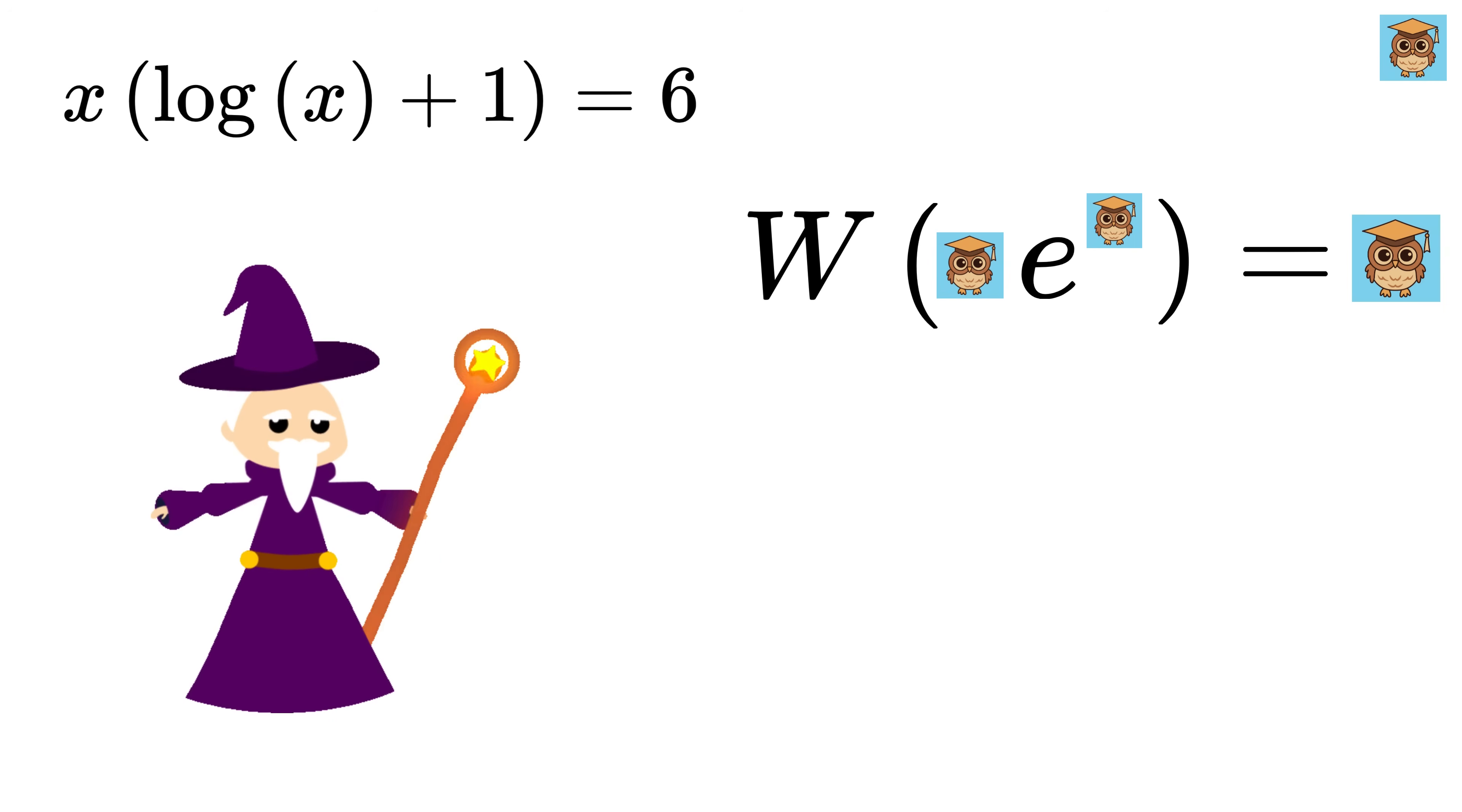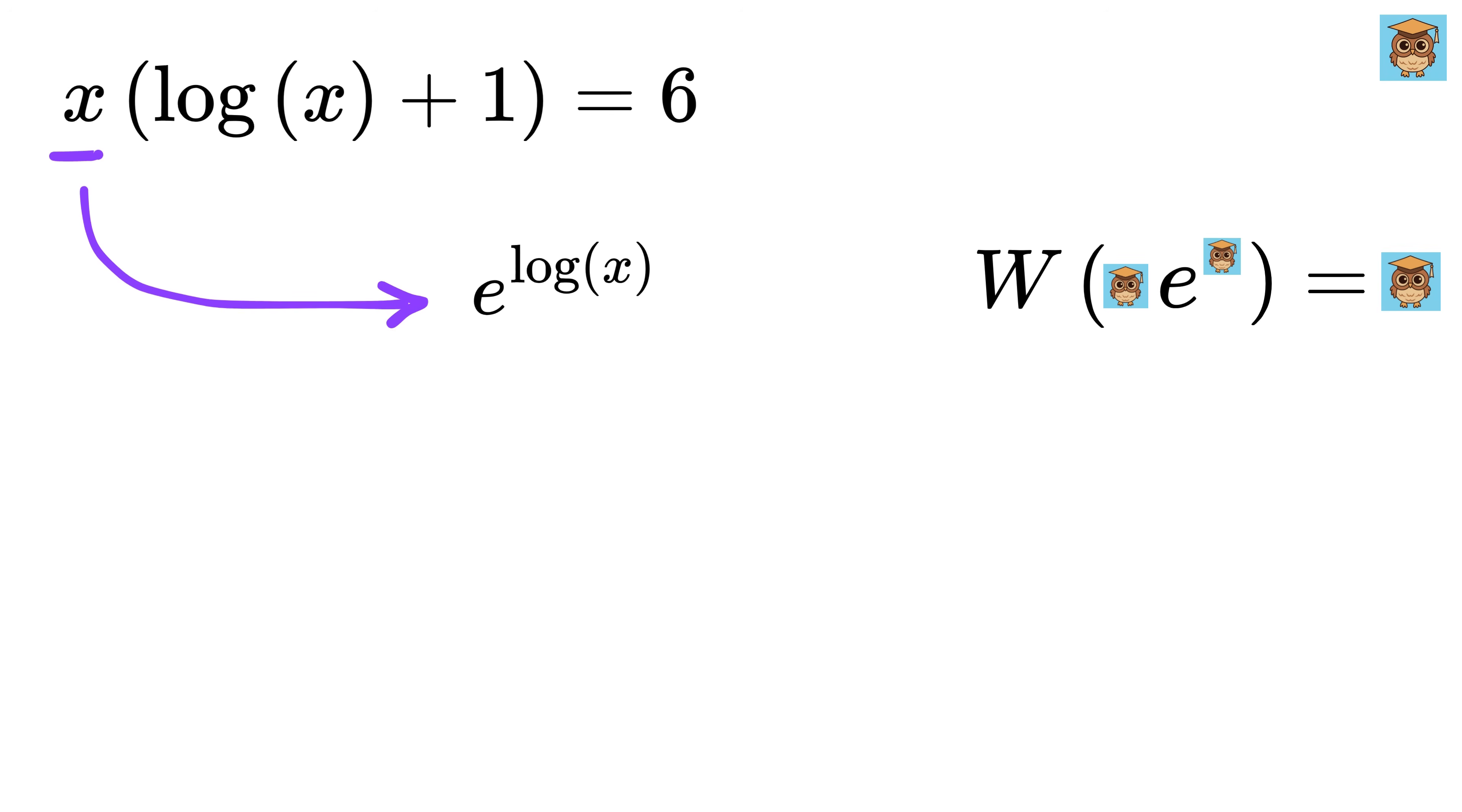Now here comes the magic. We can rewrite x as e to the power natural log of x, right? So put it here. Now multiply both sides of the equation with e, and we get 6 times e equals log of x plus 1 times e to the power log of x times e.